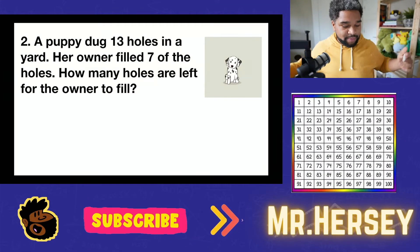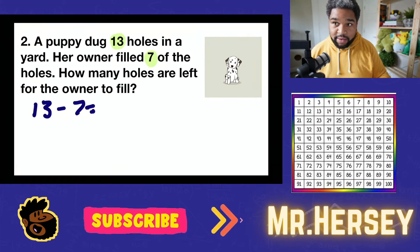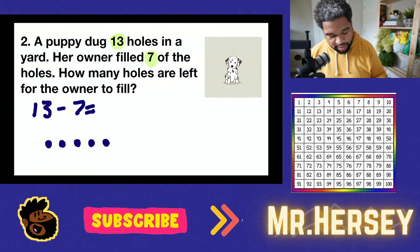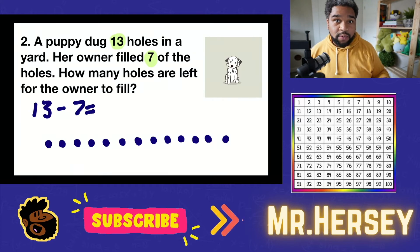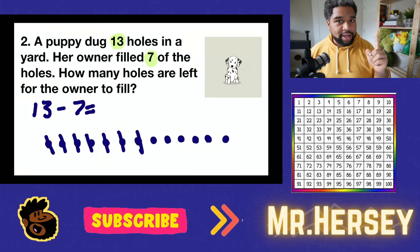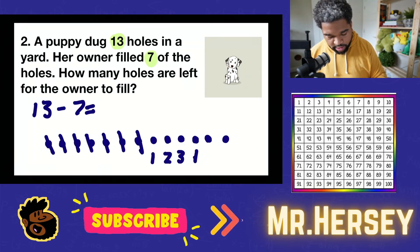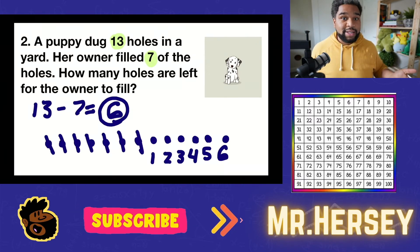Let's find out if you got that right answer. The puppy dug 13 holes, the owner filled seven, which means our number sentence is going to look like 13 minus 7. So we need to draw 13 holes — 1, 2, 3, 4, 5, 6, 7, 8, 9, 10, 11, 12, 13. Now we just need to take away 7 — 1, 2, 3, 4, 5, 6, 7. Last but not least, we count up what's left to get our answer — 1, 2, 3, 4, 5, 6. So 13 minus 7 is 6. Did you get the right answer?